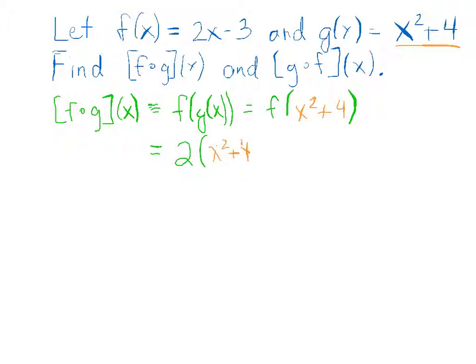That's 4. And then you still have the minus 3. So you simplify this. This gives you 2x squared plus 8 minus 3, which finally gives you the answer of 2x squared plus 5.